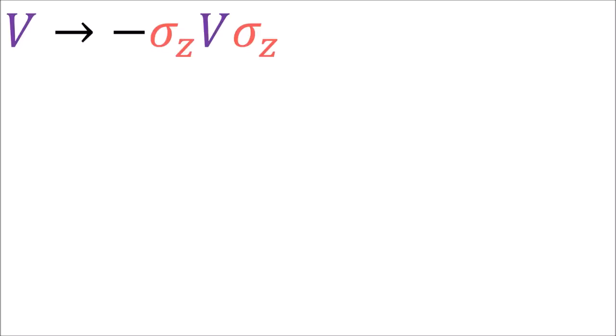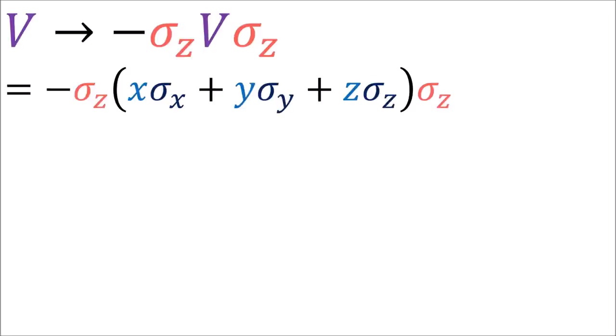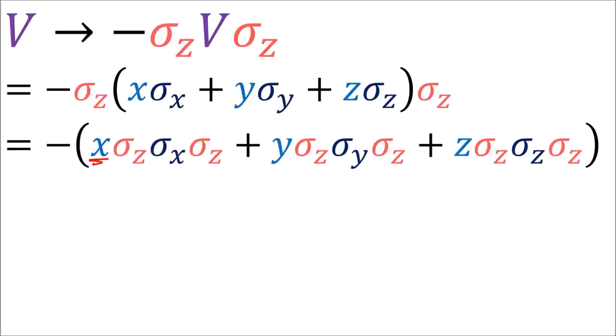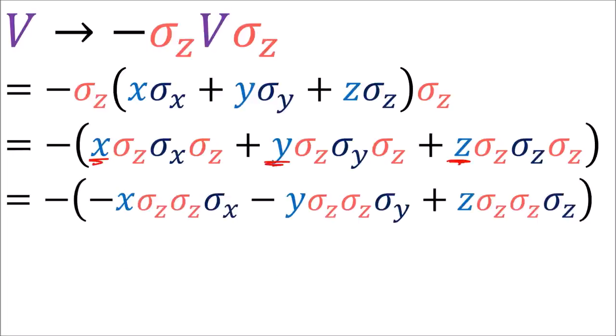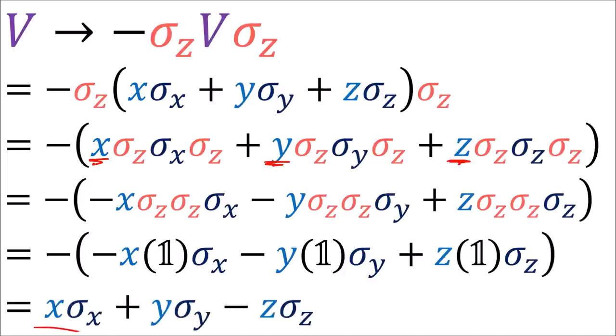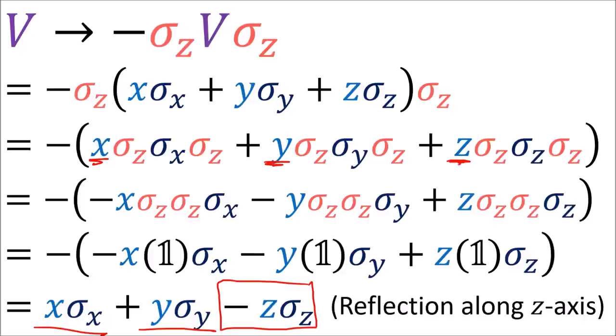Now watch what happens when we take a general polyvector v and negative conjugate by sigma z. We can expand our polyvector as a linear combination of the sigma matrices and pull all the vector components out in front, since they are just numbers. We know all these negative conjugations leave the x and y components unchanged and flip the sign of the z-component. So we've shown that negative conjugating a polyvector by sigma z will reflect the vector along the z-axis.